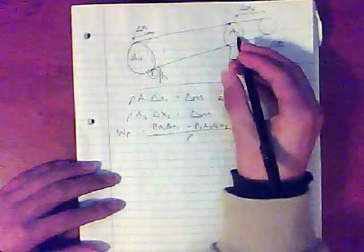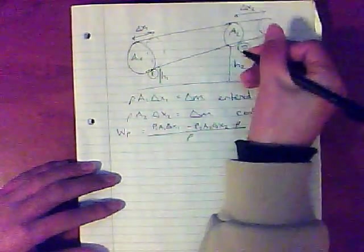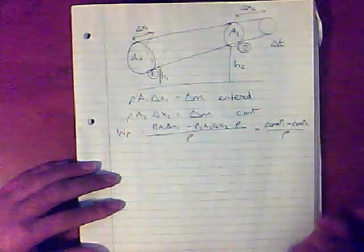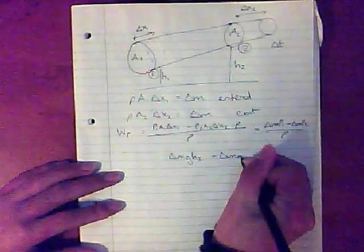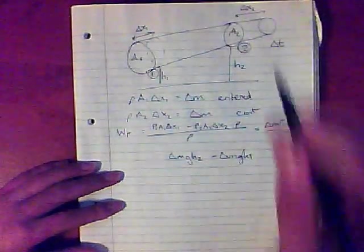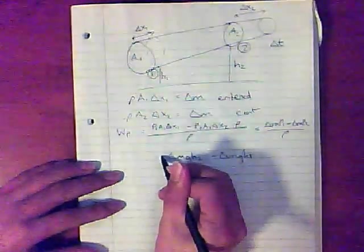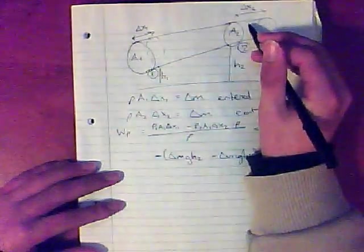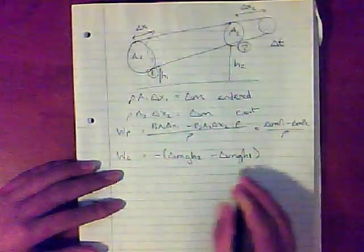Second thing that does work is gravity. And you can do this by doing the negative of the potential energies. Now, you should know that potential energy is MGH. So the potential energy there is MGH2 minus this. Now, if you think about it, you're gaining potential energy, which is going against gravity. And that's why you put this as a negative. That's the work done by gravity because you're going against gravity or going up the slope.